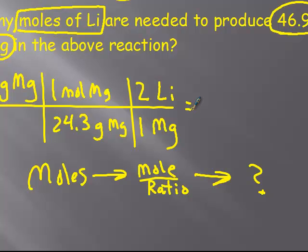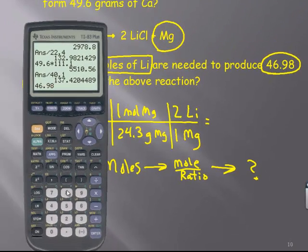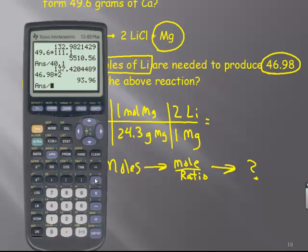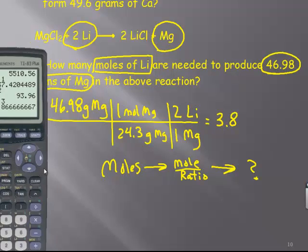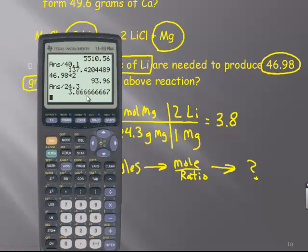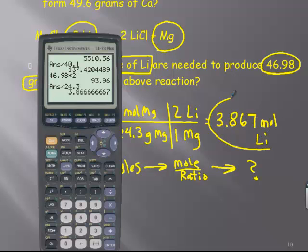If I asked for grams or if it asked for the mass, then I would have to do one mole in the molar mass of lithium. Or if it was a gas at STP, I could say how many liters or how many milliliters at STP. But this is a solid, so we wouldn't do that. All right, so anyway, we're done. So we calculate. 46.98 times 2 across the top. Divide by 24.3. And we get 3.867 moles of lithium.